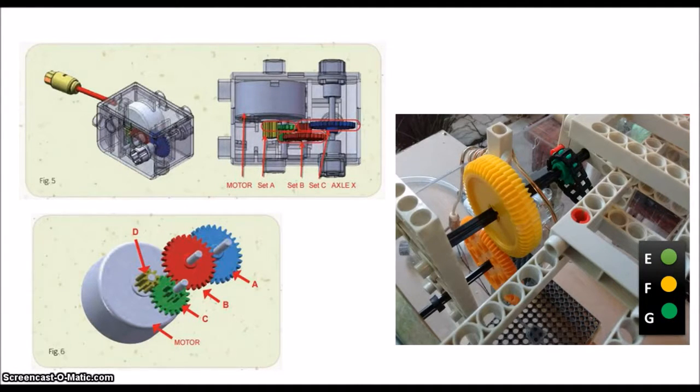We used an H-bridge to control the rotation of the motor. This H-bridge is the L293D. And basically we used two buttons with pull-down resistors, which give a signal, a digital signal to the Arduino. And then activate the digital output that goes to the input of the H-bridge.